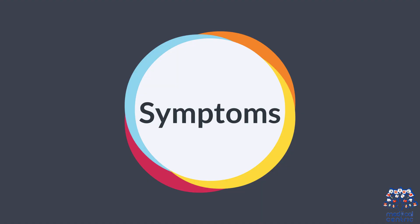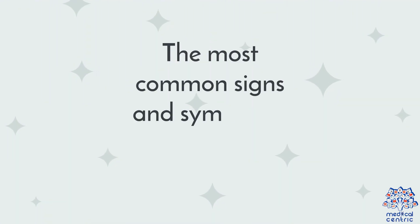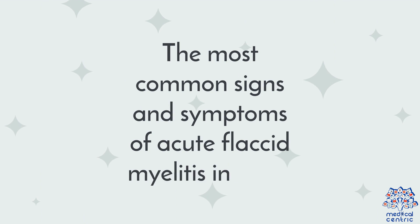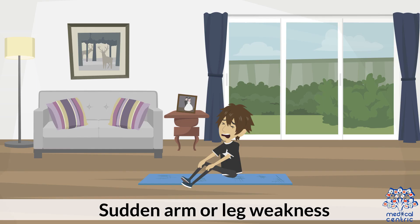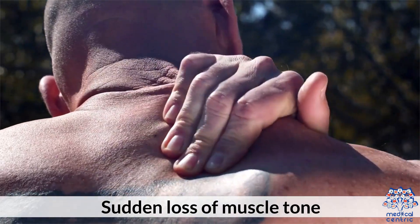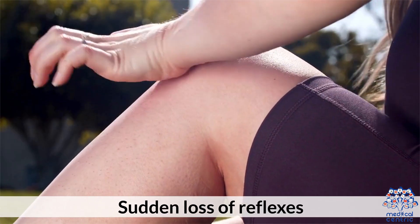The most common signs and symptoms of acute flaccid myelitis include sudden arm or leg weakness, sudden loss of muscle tone, and sudden loss of reflexes.